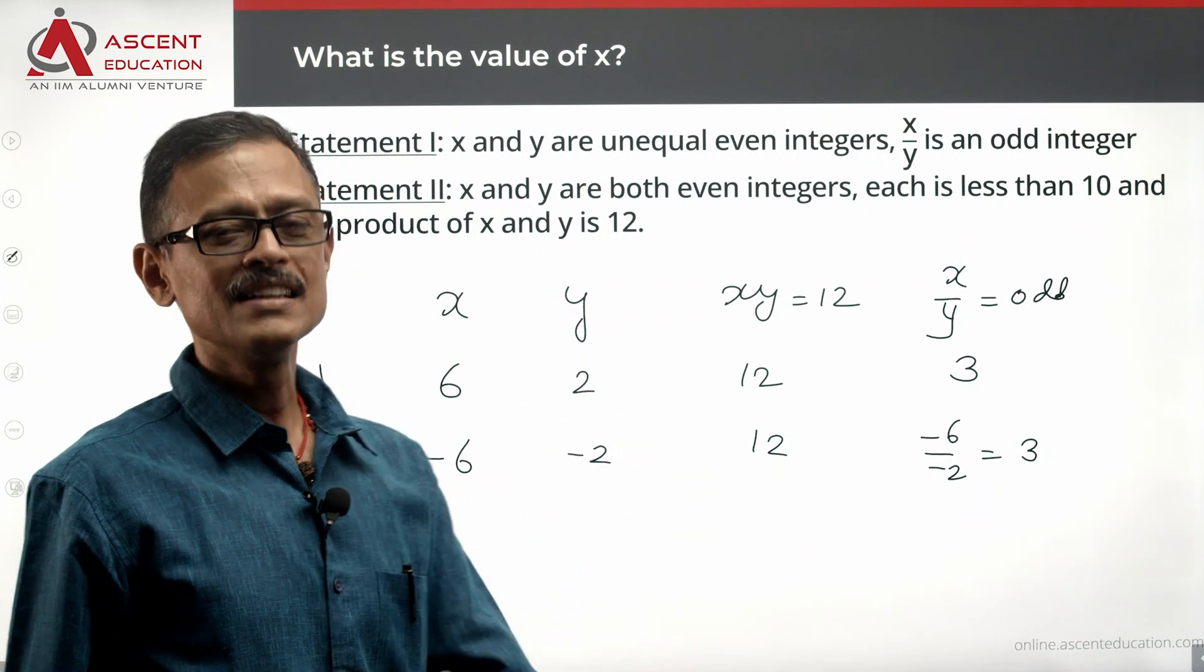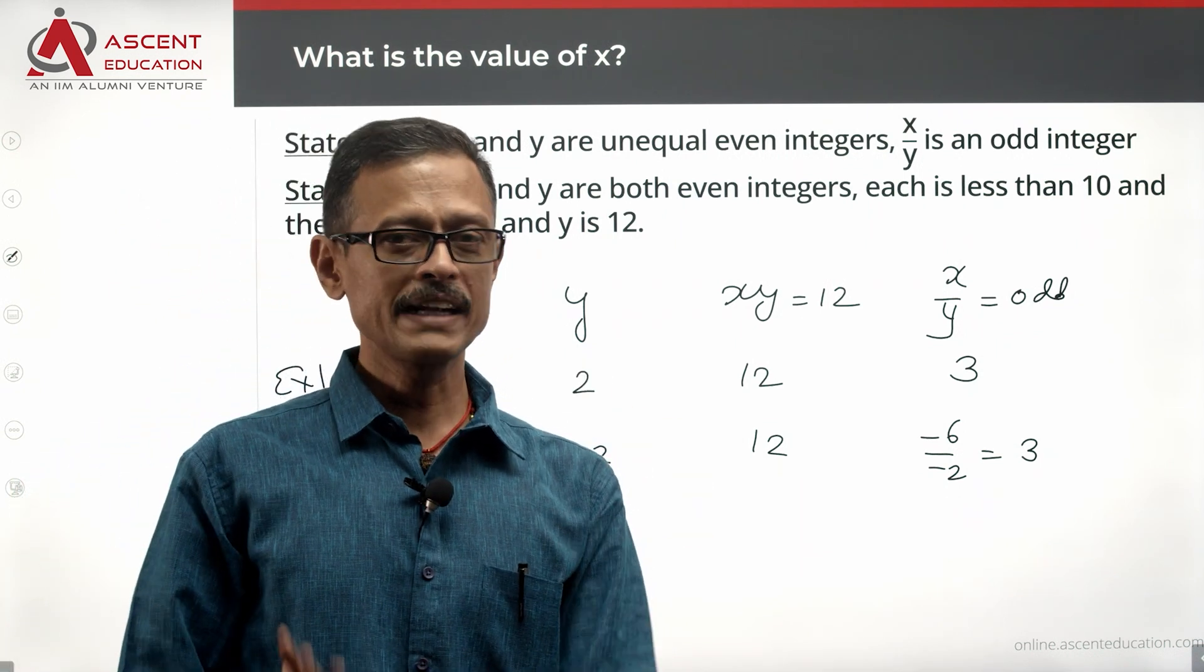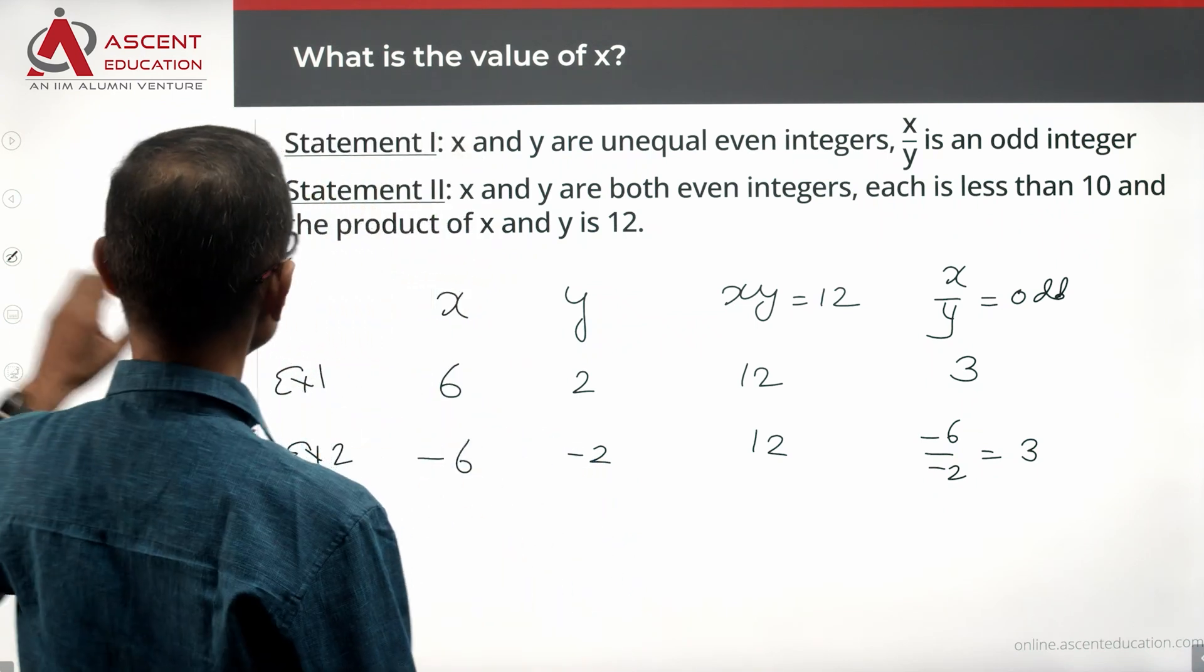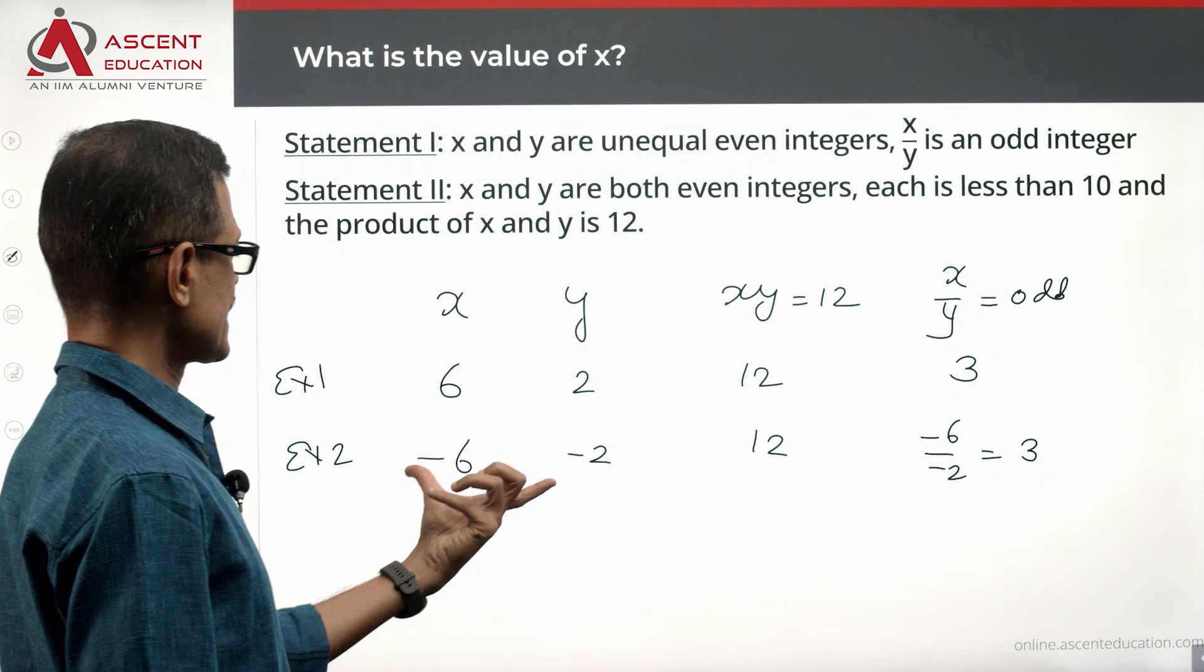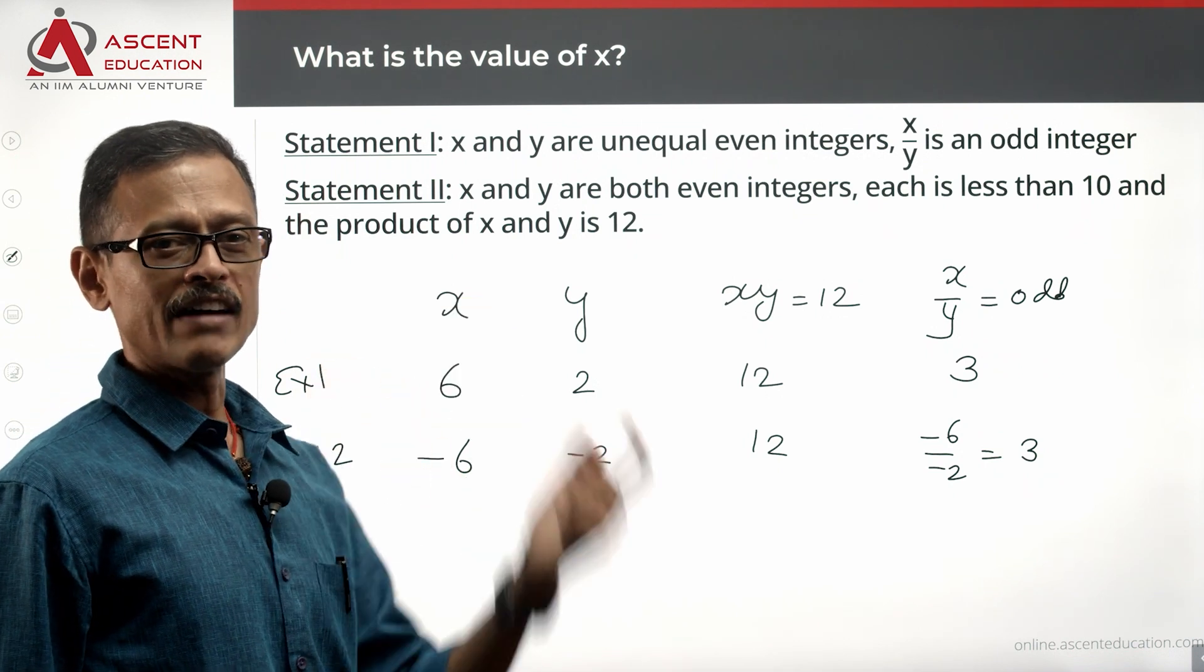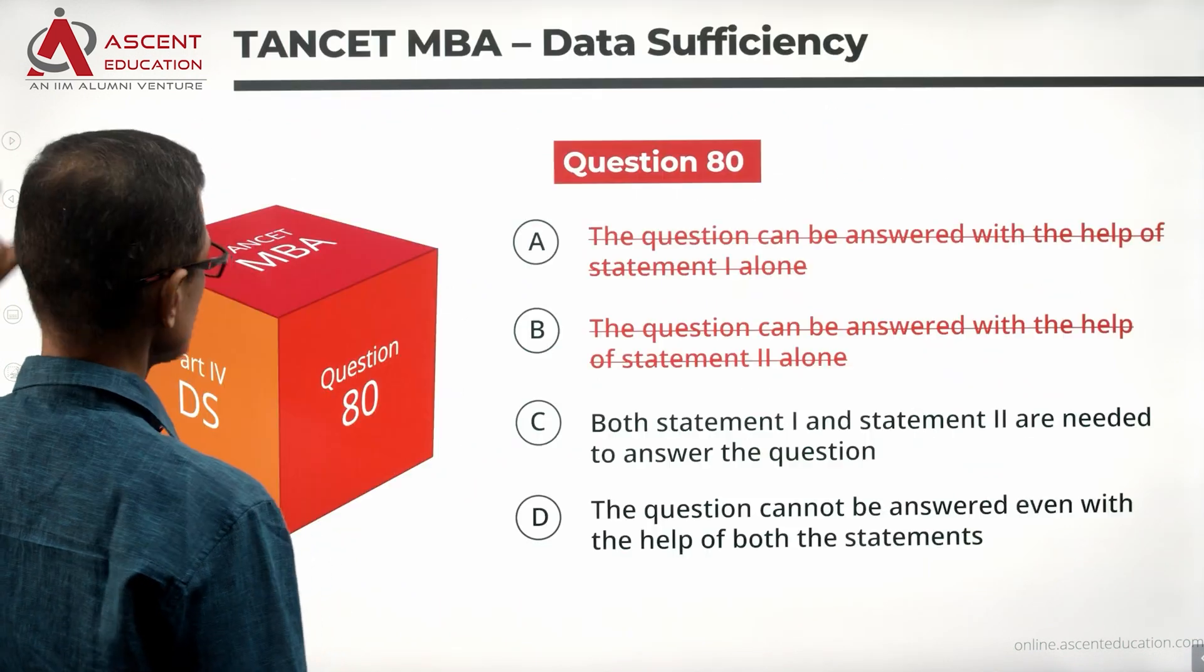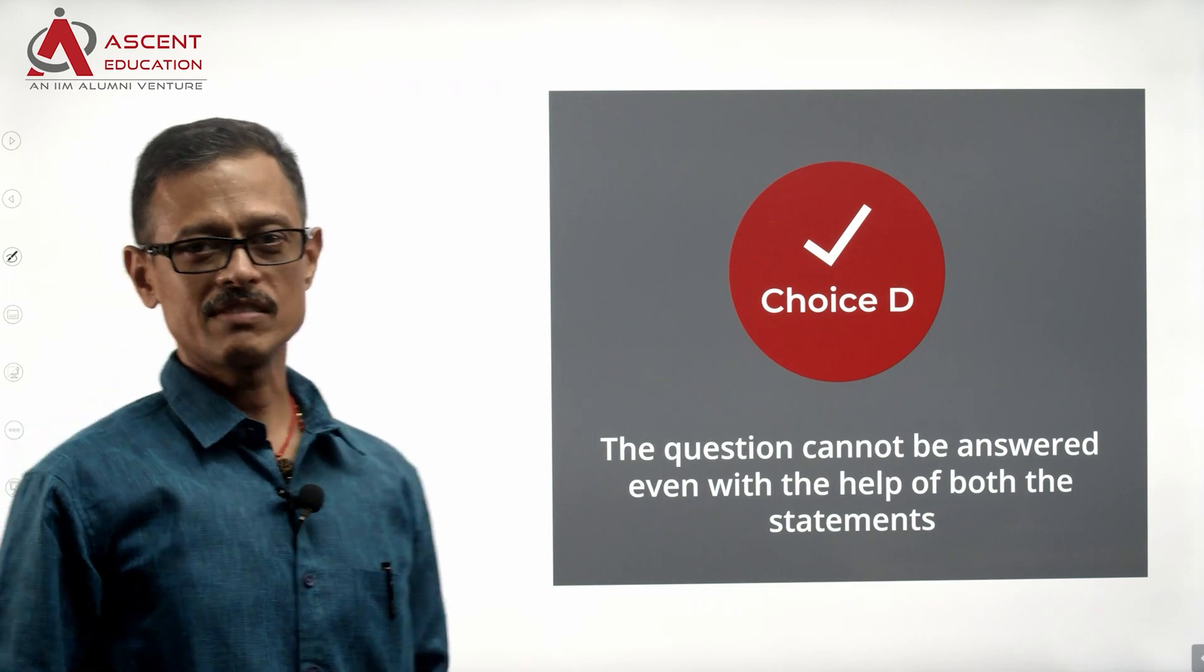So essentially we have not been able to come up with a unique value for X despite combining the statements. Statements together are not sufficient. Key takeaway is that negative numbers, we should not lose perspective of evaluating for negative numbers. Statements together are not sufficient. We need additional data. So choice D is the correct answer to the question.